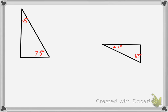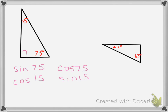Here we have a 75-15-90 triangle. I'm not going to give you the side lengths for this one — we're simply going to look at the relationships between sine and cosine. Cosine of 75° gives us 0.26, and cosine of 15° is 0.97. Let me make a little table to organize these values.